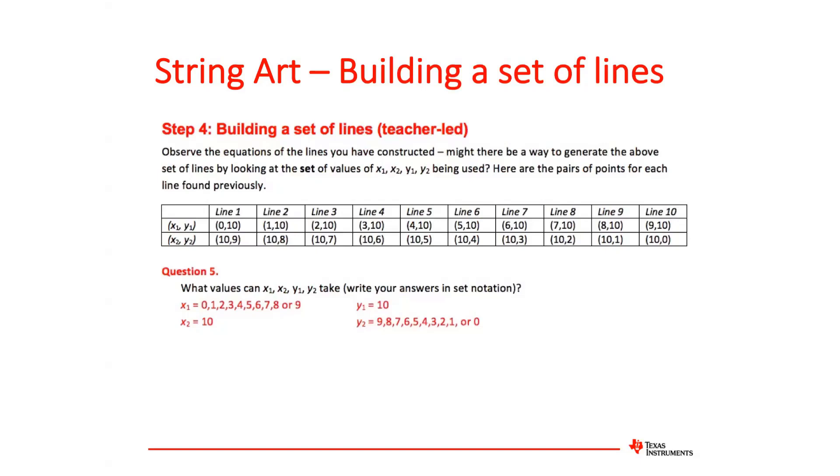And from there, you can see that there is a pattern. So for example, the x1 values vary from 0 up to 9 and the y1 values are always on 10 because they're always on the top of the grid, the sample grid we used.